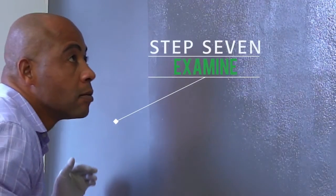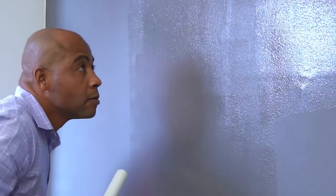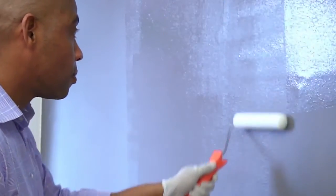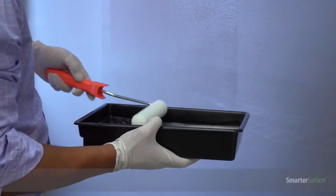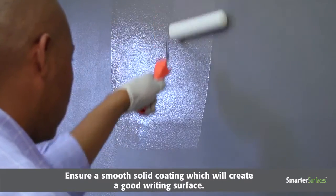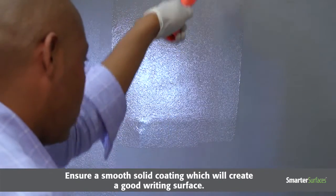Step 7. Examine. Once you have completed each 1 meter section, stop and examine the section just painted, from several angles, looking for any imperfections in the coating. Re-wet the roller with SmartWall Paint to retouch any missed spots on the surface, to ensure a smooth, solid coating, which will create a good writing surface.